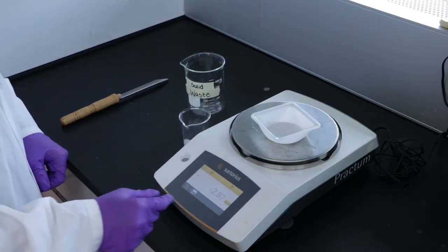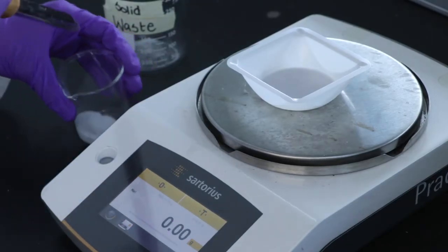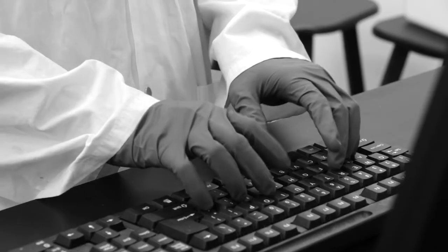Be sure to handle the weighing boat with gloves or a kim wipe so as not to transfer moisture or oil from your hands. If you are using gloves make sure not to touch any common surfaces such as doorknobs or keyboards so as not to contaminate them.